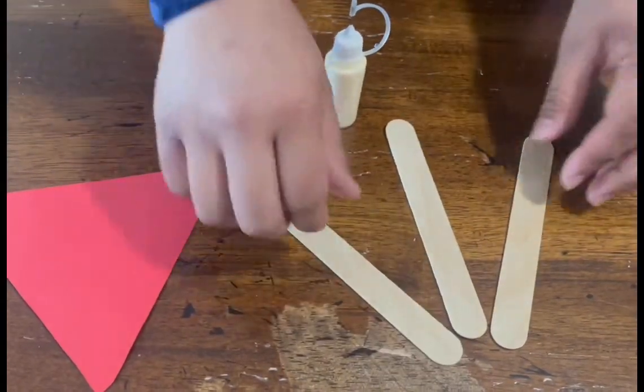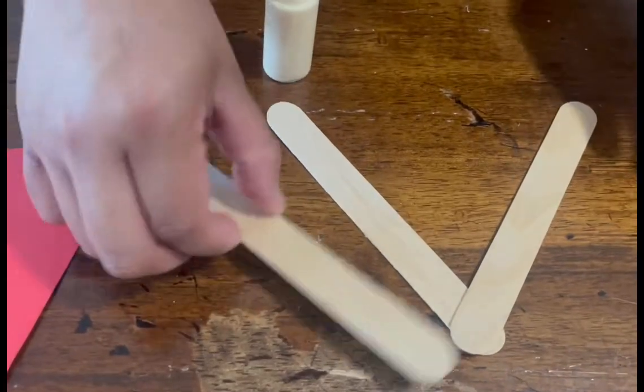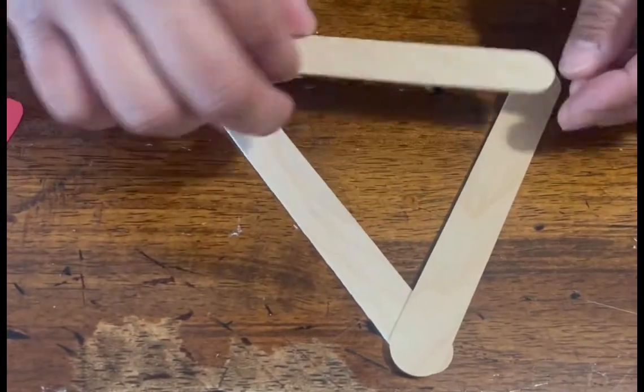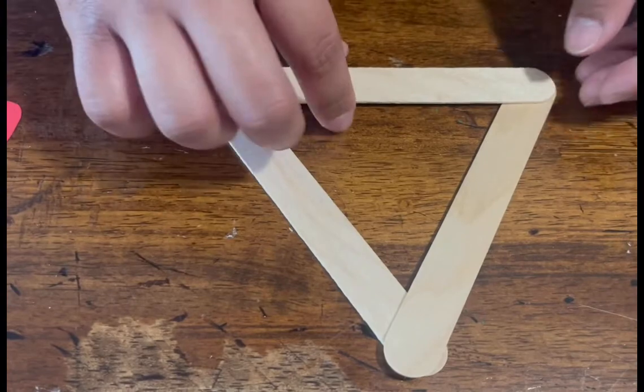What we're going to be doing is grab your three popsicle sticks first and form a triangle shape to it. So it's going to be like this, okay.